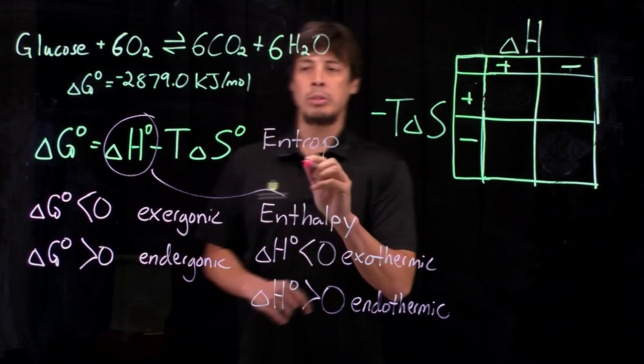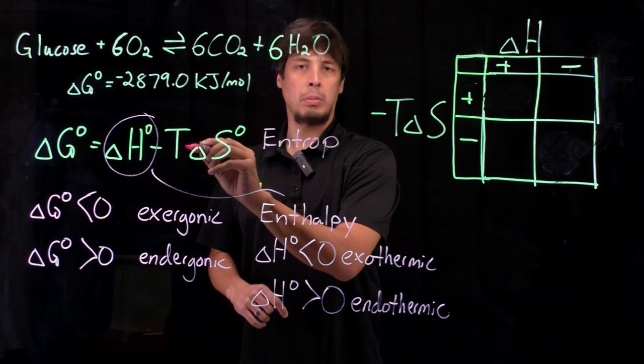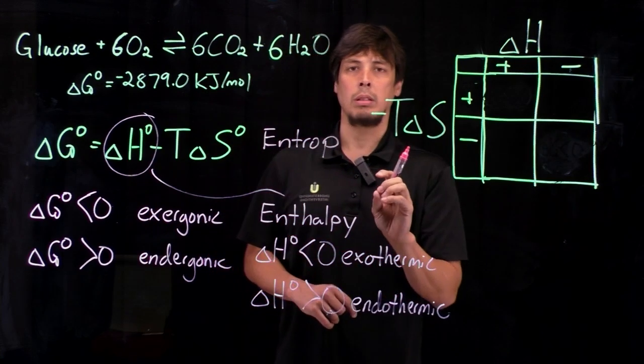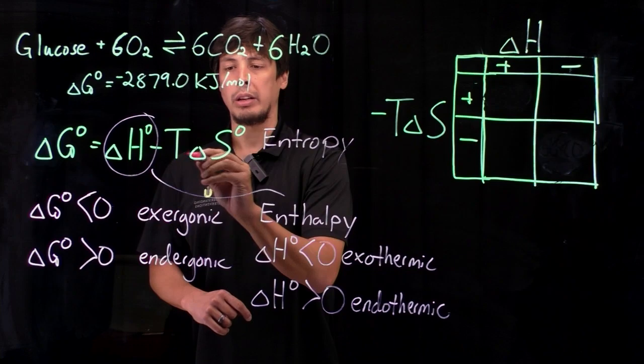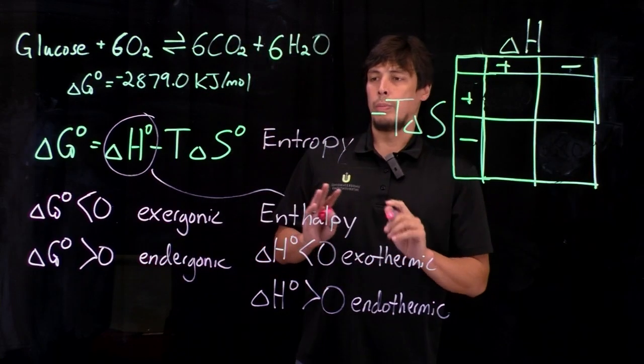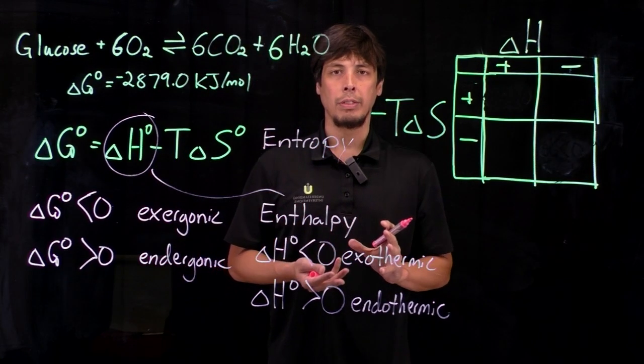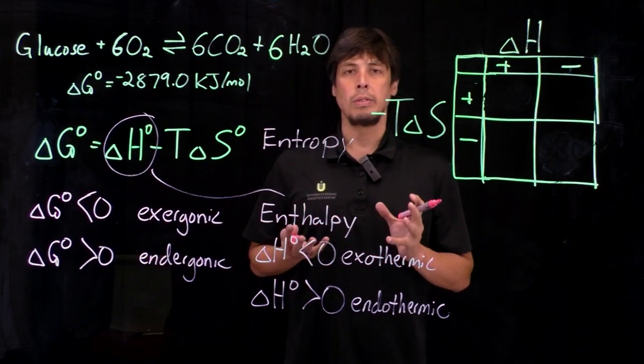Note that the entropy term delta S is multiplied by temperature, and we'll get to why that's important later on in the lecture. One way that entropy is commonly defined is as a measure of disorder.